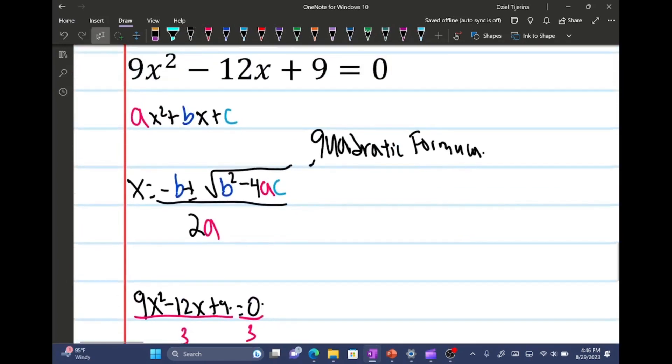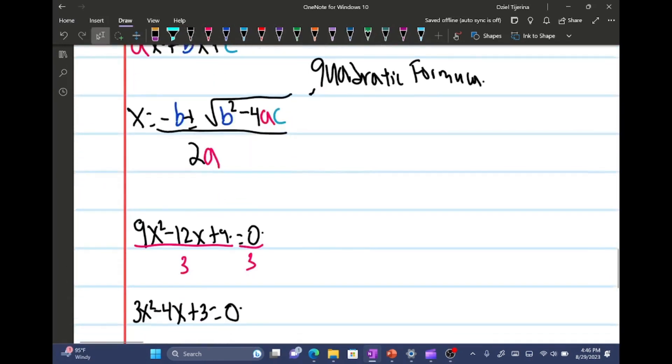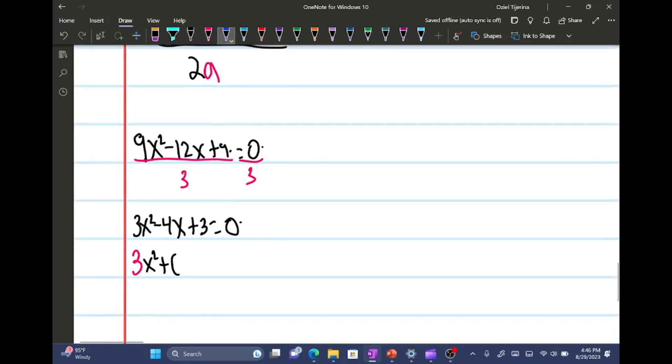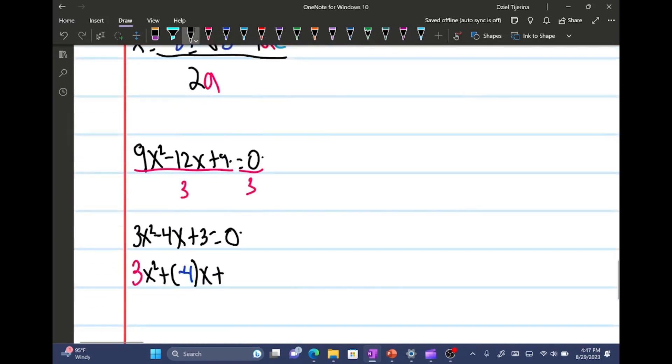It's gonna be 3x squared minus 4x plus 3 equals 0. And now I can label my a, b, and c here. So let me kind of rewrite it so I know I have 3x squared plus negative 4x, and then plus 3.